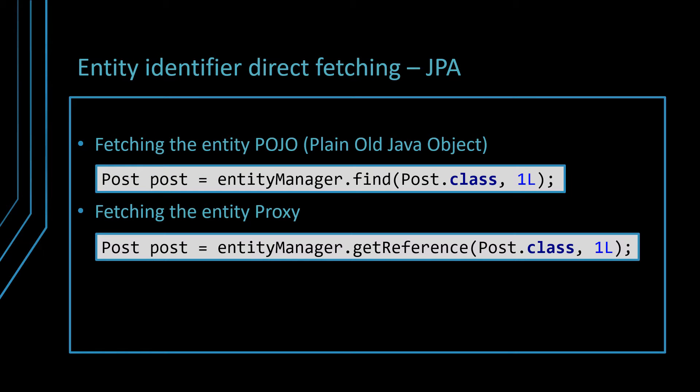To fetch the entity object, you can use the find method of the EntityManager object reference. The find method returns a plain old Java object entity with all the basic attributes loaded eagerly. On the other hand, the getReference method returns an entity proxy object which has only the identifier value set, while the remaining attributes are fetched lazily when one of the non-identifier properties is accessed for the very first time.